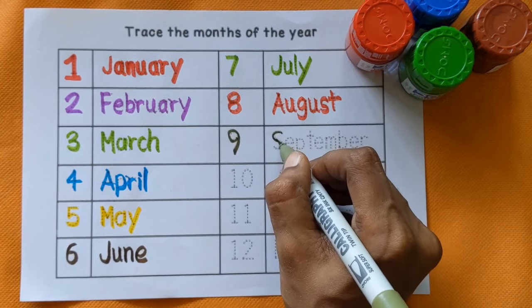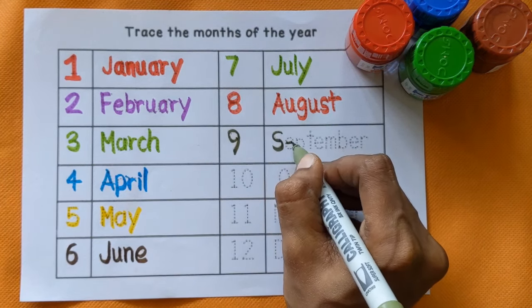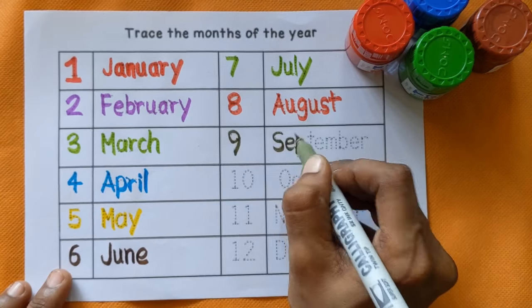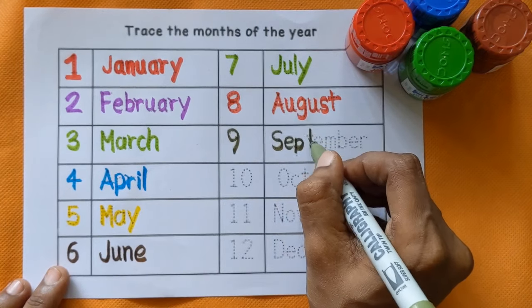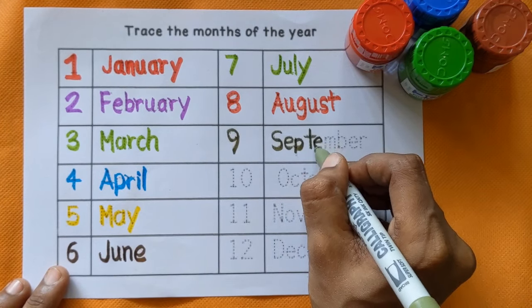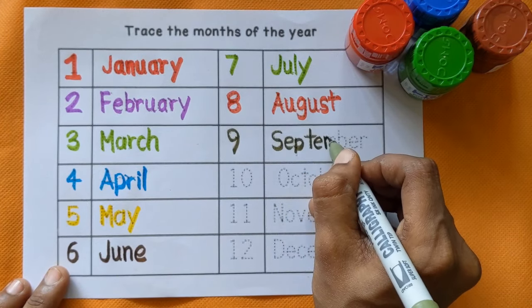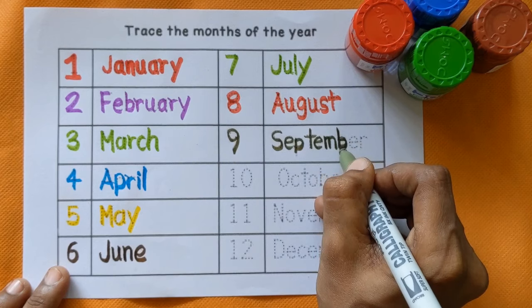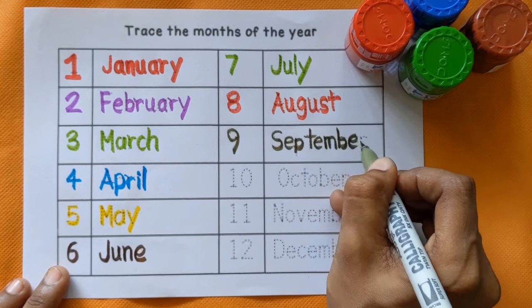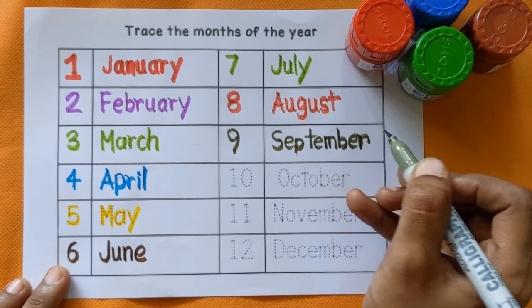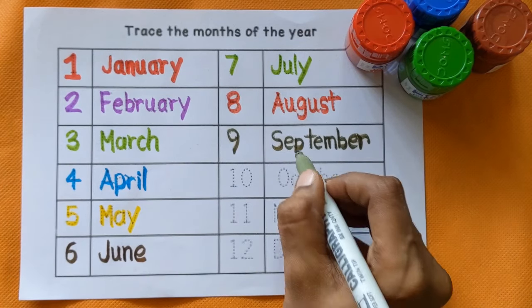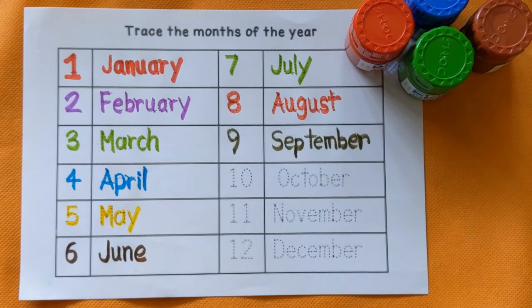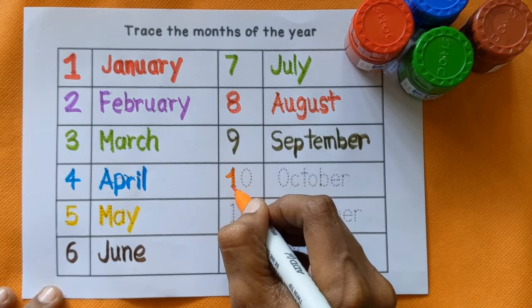Next is number 9. September — S, E, P, T, E, M, B, E, R.